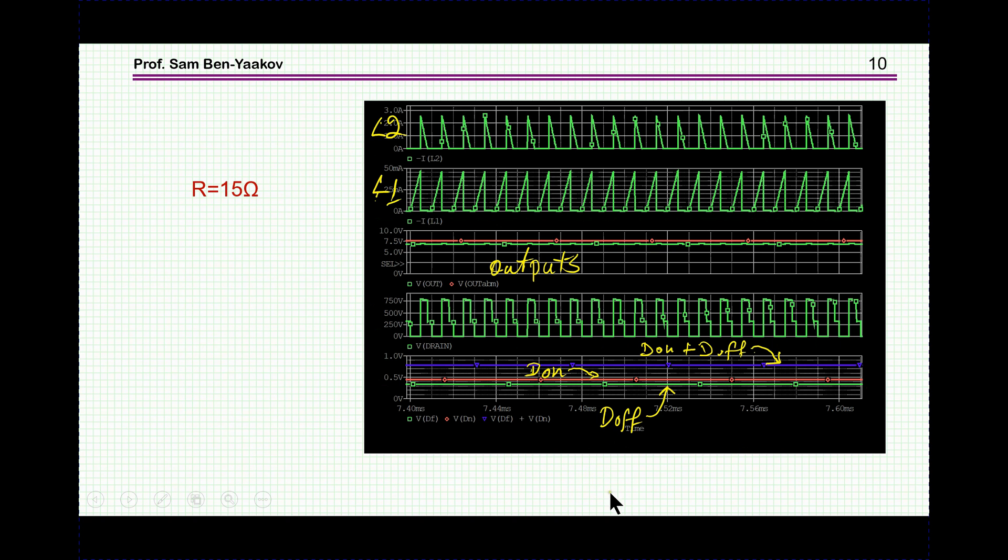Now, here is R equals 15 ohms. And this is now in DCM. You can see it here, that the primary starts from 0, and the secondary goes to 0. Again, we have these two outputs, a slight mismatch between them. The voltage is different, because the transfer function is different. And this is the switch voltage. We see here the DCM operation.